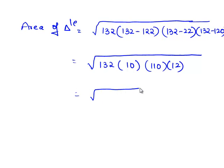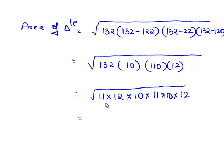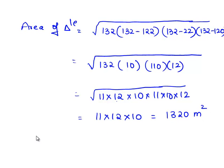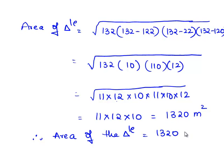Therefore, 132 can be written as 11 times 12, so the expression becomes the square root of (11 times 12) times 10 times (11 times 10) times 12. Grouping the pairs: 11 times 11 is 11 squared, 12 times 12 is 12 squared, and 10 times 10 is 10 squared. Bringing 11 times 12 times 10 out of the square root gives us 11 times 12 times 10, which equals 1320 meter square. Therefore, the area of the triangle is equal to 1320 meter square.